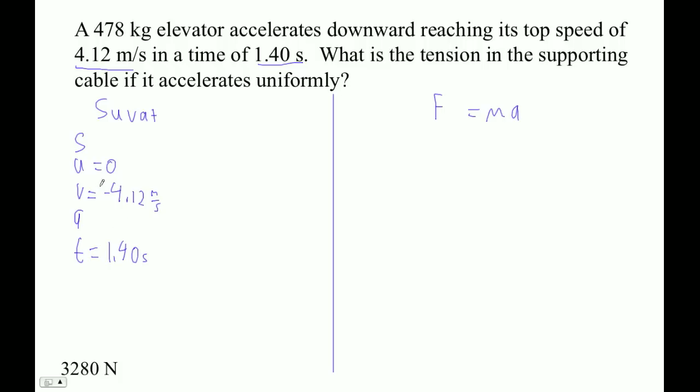And then we want to find the acceleration using a formula that doesn't use S. And that formula is V equals U plus AT. So let's see. Negative 4.12 equals 0 plus A times 1.4.